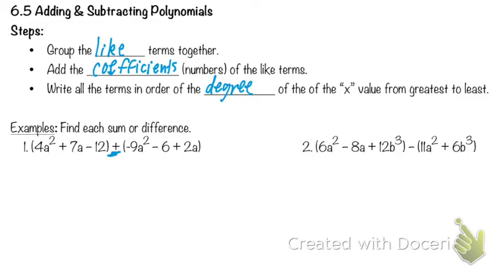So what am I putting one underline underneath? What comes first? Negative 9a squared — and is there anything else that also comes first? 4a squared. We're going to do the entire thing, because we're adding this polynomial with this polynomial. And then 2a would have two underlines, as would 7a.